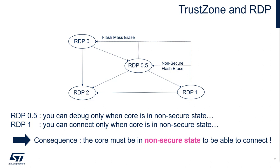The only problematic that I address in this slide is the connection. You have four levels of RDP when you have TrustZone activated. RDP level 0 means you can always connect. RDP level 2 means you can't connect at all to your target. But in RDP 0.5 or RDP 1, you can connect, but only when the core is in a non-secure state — that means when the core is running some code in the non-secure application.